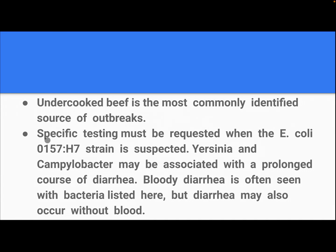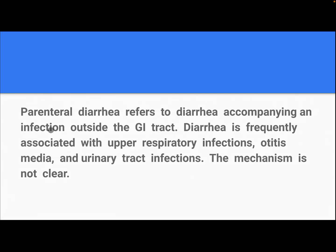Undercooked beef is the most commonly identified source of outbreak. Specific tests must be requested when the E. coli strain is suspected. Yersinia and Campylobacter may be associated with a prolonged course of diarrhea. Bloody diarrhea is often seen with the bacteria listed, but diarrhea may also occur without blood. Parenteral diarrhea refers to diarrhea accompanying an infection outside the GI tract.